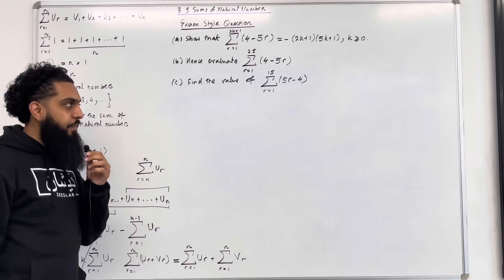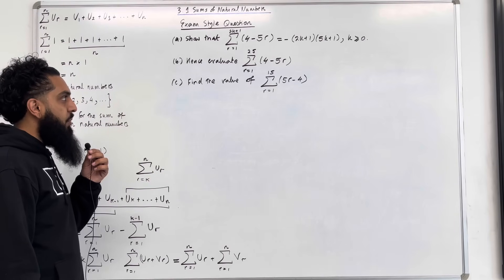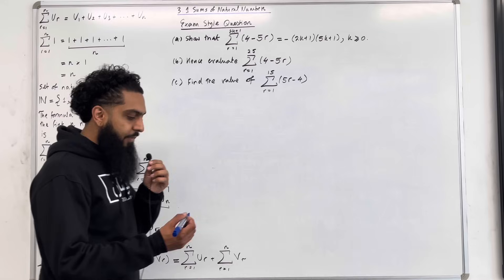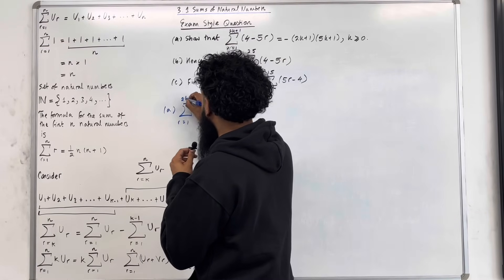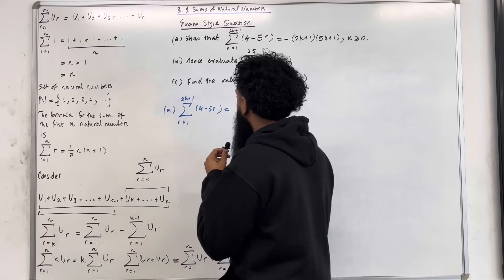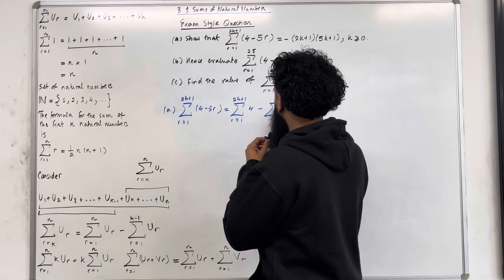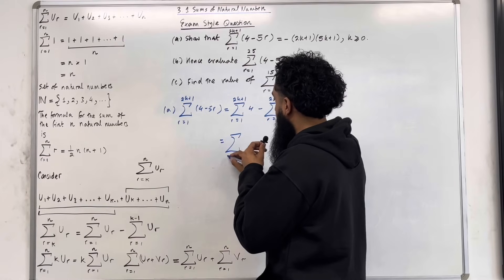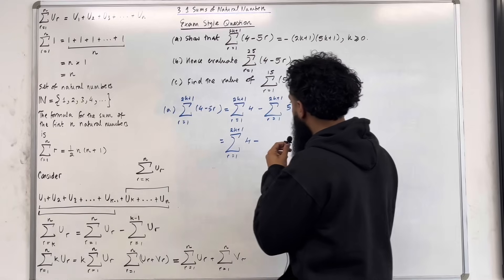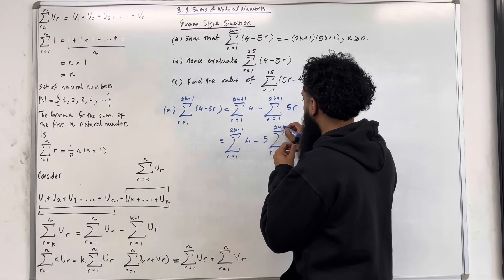Here is the second exam-style question. Part A: show that the sum from R equal 1 to 2K plus 1 of 4 minus 5R is equal to minus 1 lots of 2K plus 1, multiplied by 5K plus 1, where K is greater than or equal to 0. I've got the sum from R equal 1 to 2K plus 1 of 4 minus 5R. I can split this into the sum of 4 minus, with 5 taken outside the summation, giving 5 lots of the sum from R equal 1 to 2K plus 1 of R.